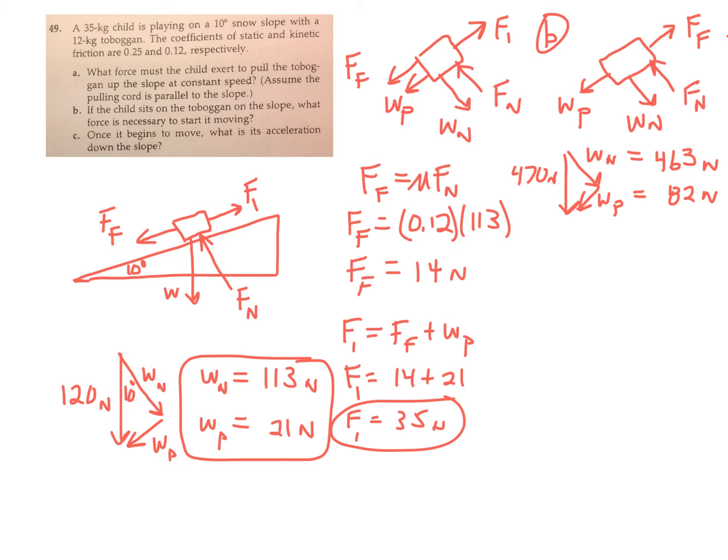The normal force, well, we want to calculate the frictional force, the maximum frictional force, because now we have static. So F sub F max is going to be the coefficient, which is 0.25 now, times the normal force, which is 463. So I calculate my maximum frictional force, which turns out to be about 116 newtons.